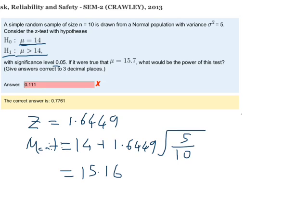If from our sample size of 10 we got a score for our x-bar of 15.16 or higher, then we would reject the null hypothesis.